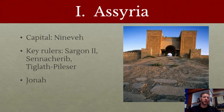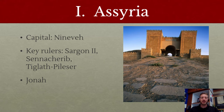Jonah didn't want to go to Nineveh because the Assyrians were historical enemies of the Jews — they committed a lot of atrocities against the Jews and conquered them. Eventually he does go after the fish and all that, and they do repent, and at least for that time the city of Nineveh is spared.